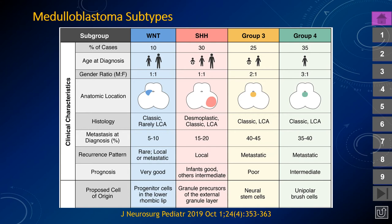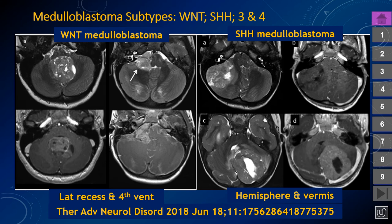The WNT medulloblastoma tends to be ventral and lateral to the fourth ventricle. The SHH medulloblastoma involves the cerebellar hemisphere. Groups 3 and 4 tend to be in the vermis behind the fourth ventricle. A mnemonic: W is like two Vs — the WNT or wingless medulloblastoma is ventral to the ventricle or involves the ventricle. Remember those two Vs — ventral and ventricle — for the WNT-mutated medulloblastoma.